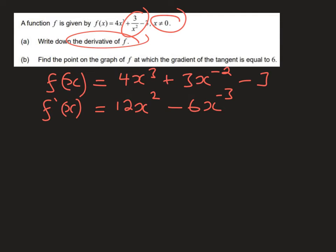Now that's fully correct. We can leave it like that. If we want to express it slightly differently, we could put it back in the same form that it was given in the question with a fraction, which would be 12x² - 6/x³. Both of those forms are fully correct.